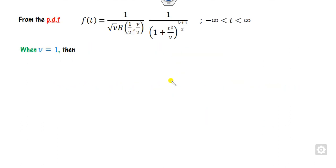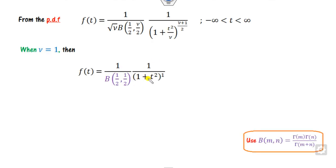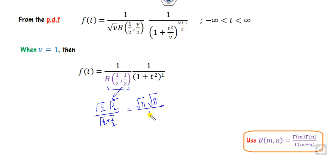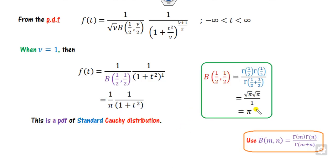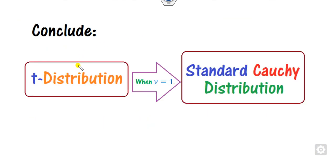What are the special cases of the T-distribution? If you substitute mu=1 into the PDF, you get a specific expression. Using the beta function with gamma of one-half equal to root pi and gamma of 1 equal to 1, this value simplifies to pi. The resulting distribution is nothing but the Cauchy distribution. So the conclusion is: whenever you have the T-distribution with degree of freedom nu=1, it becomes the Cauchy distribution.